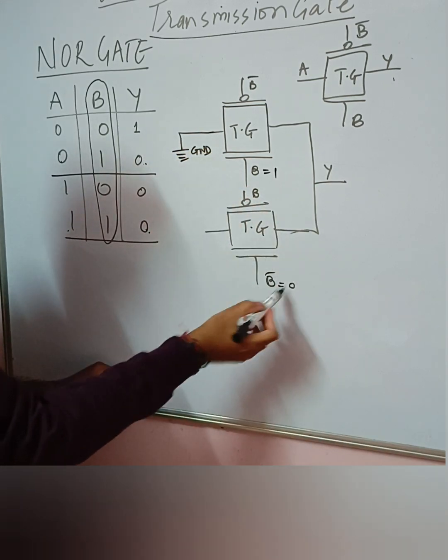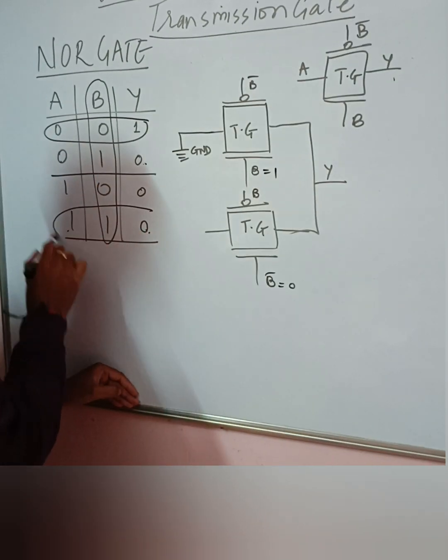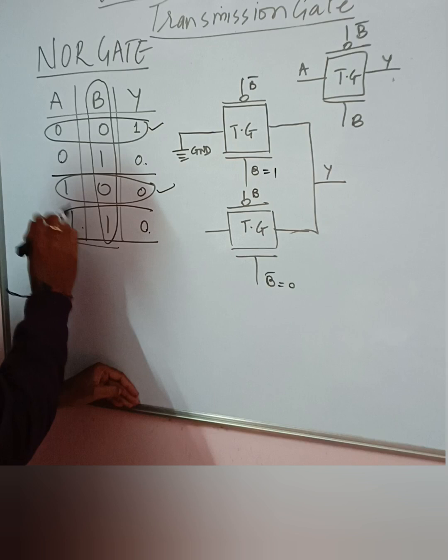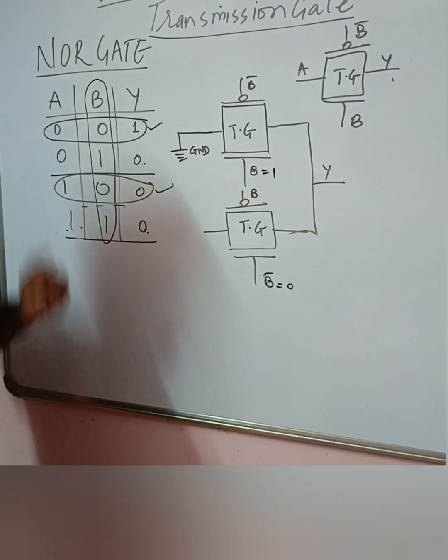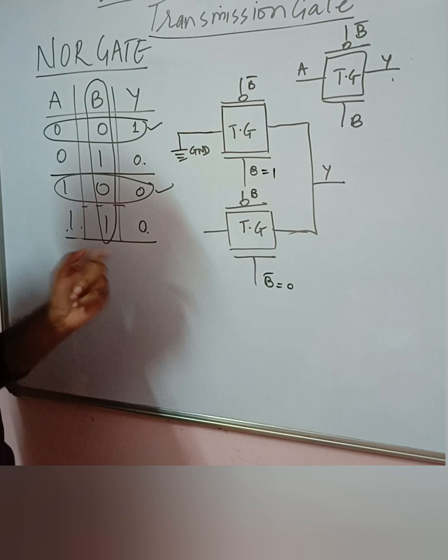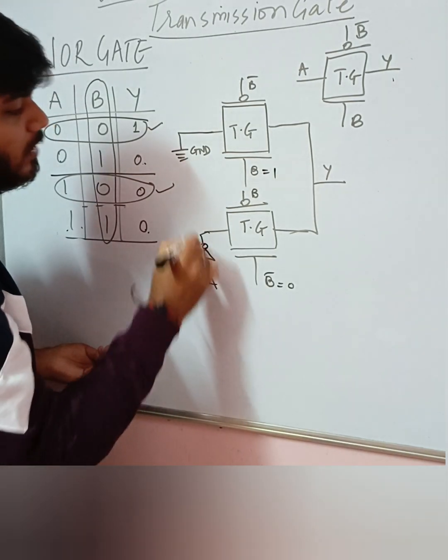Okay, and the next combination: when B is equal to 0. When B is equal to 0, this is the combination. Sorry, this is a combination - this one and this one. When B is equal to 0 and A is 0, your Y is 1. When B is equal to 0 and A is 1, Y is 0. So basically inversion. So here you will connect a NOT gate with your input A.